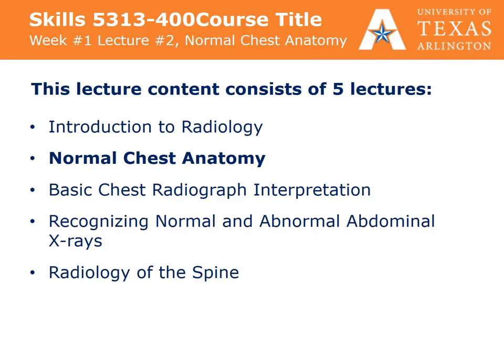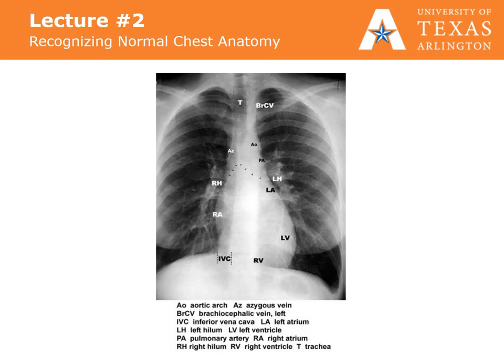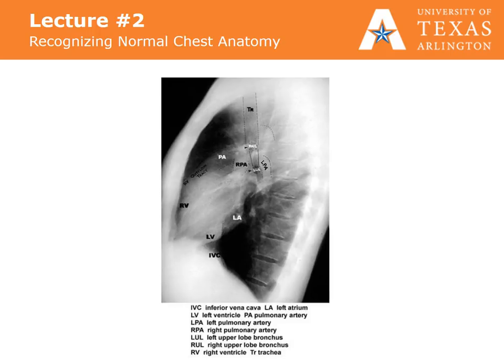This is the second of our five lectures on radiology. This lecture is Normal Chest Anatomy. Here is an image of a normal chest anatomy with labels on it as to the arteries and sections of the heart. Please take note of all of these. This is a lateral chest x-ray with similar labels on it.